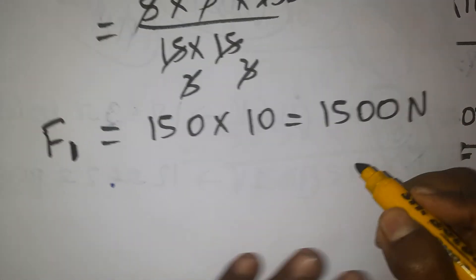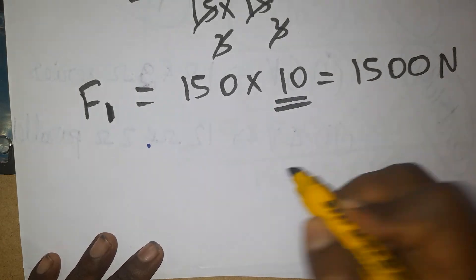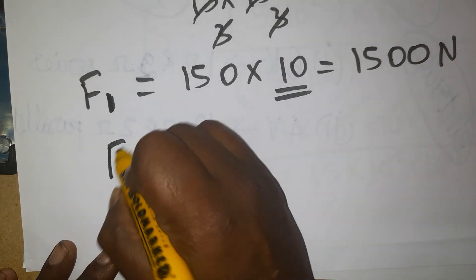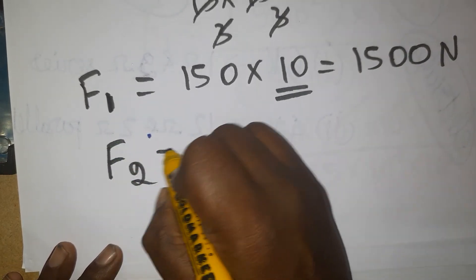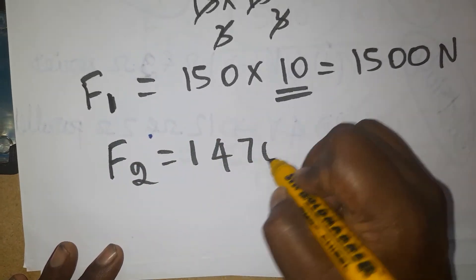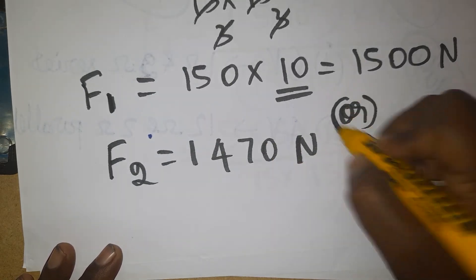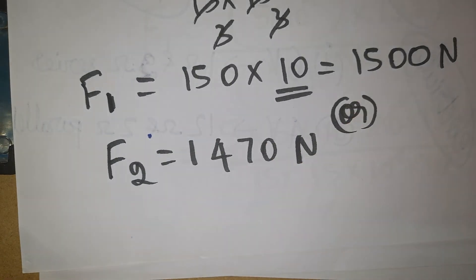The force required to lift that object is 1500 Newtons. If you take g as 9.8, then Force 1 becomes approximately 1470 Newtons. Both answers are correct — you can use either g = 9.8 or g = 10.